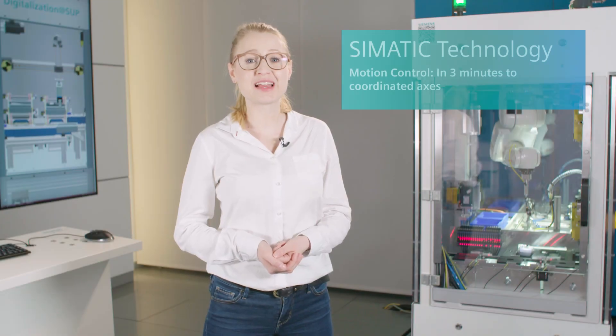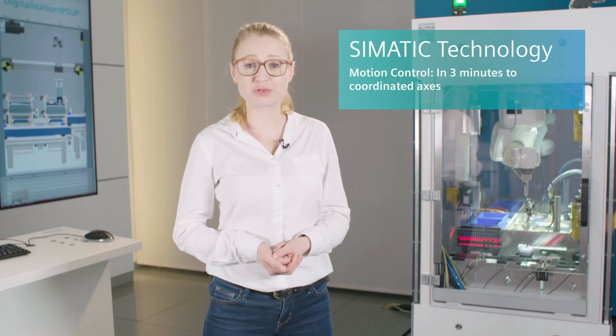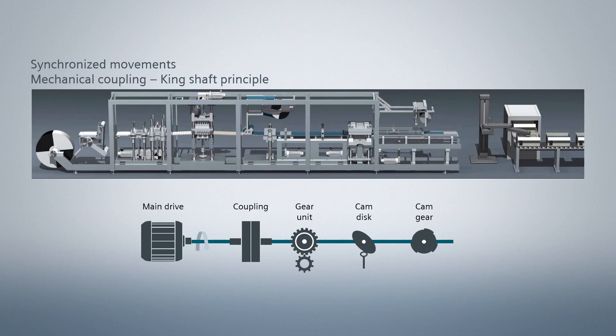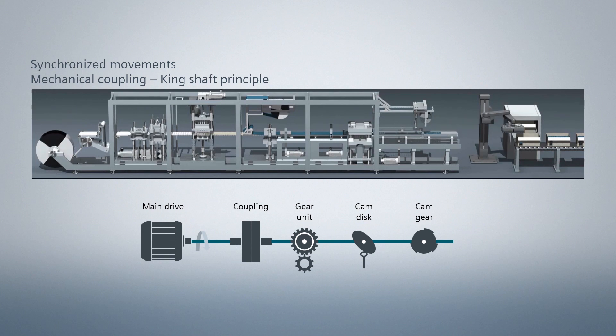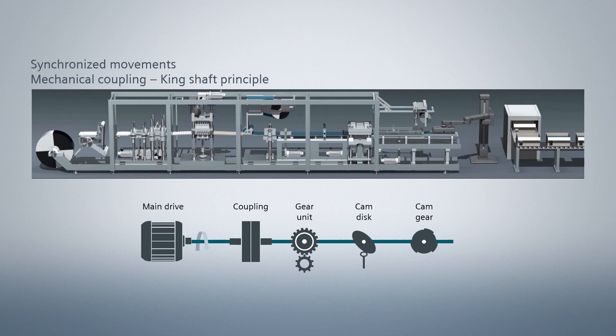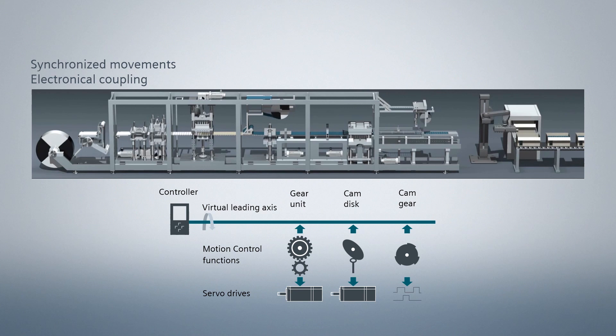Synchronized working axes are named coordinated axes. These are often still realized via mechanical couplings according to the principle of the king shaft. More flexibility and a simplified design can be achieved by using electronically coupled axes.